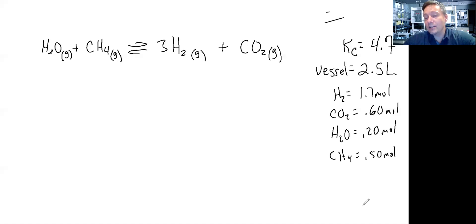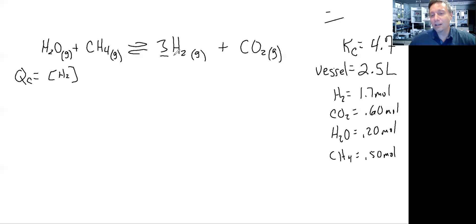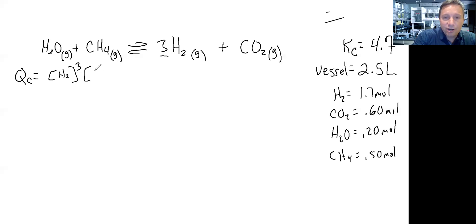So what you're going to do is calculate your reaction quotient Q — specifically Qc. I'm going to come over here and write this down. Qc is going to equal the concentration of H₂ — and I can never forget my coefficients. A lot of times I'm dealing with one, but here that coefficient is 3, so I have to cube that — times the concentration of CO₂, divided by the concentration of H₂O times the concentration of CH₄.